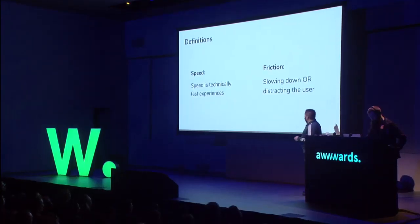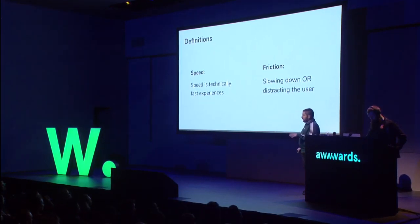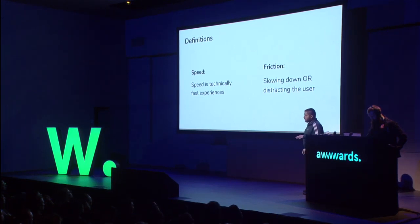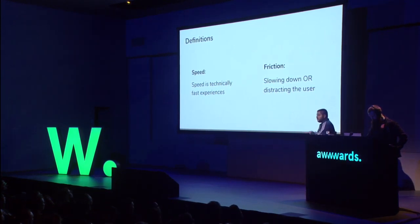When I'm talking about speed, I'm speaking about the technical things you can do to improve the speed of your site — optimizing images, minifying code, stuff like that. When I'm speaking about friction, I'm talking about the things that we do to deliberately slow down the user and distract them. And by the end of the talk, I'm sure I'll have convinced you that slowing someone down actually makes them speed up, which makes no sense, but it will.